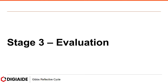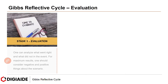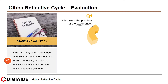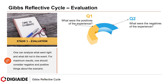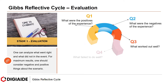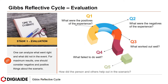Stage 3 is Evaluation. One can analyze what went right and what did not in the event. For maximum results, one should consider negative and positive things about the scenario. The questions in this stage: first, what were the positives of the experience? Second, what were the negatives of the experience? Third, what worked out well? Fourth, what failed to do well? And finally, how did the person and others help out in the scenario?